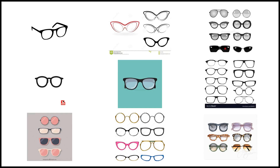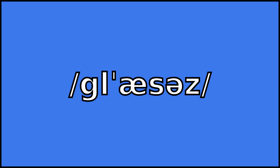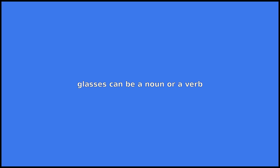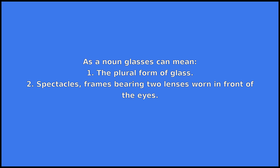Glasses. Glasses can be a noun or a verb. As a noun, glasses can mean: 1. The plural form of glass. 2. Spectacles — frames bearing two lenses worn in front of the eyes.